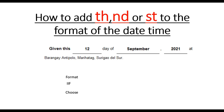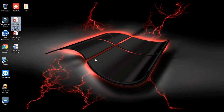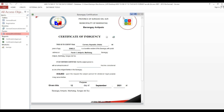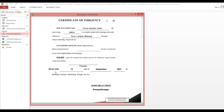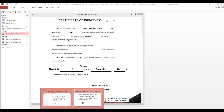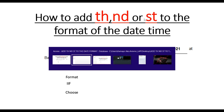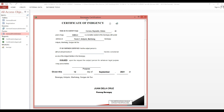I will show you how to add the ordinal suffix — TH, ST, ND, RD — to the format of the date. For example, given '12th of September', I will show how to add this suffix depending on the day of the certificate. Here is an example certificate showing '12th of September', and now we will add this ordinal suffix into the date field. Let's start.